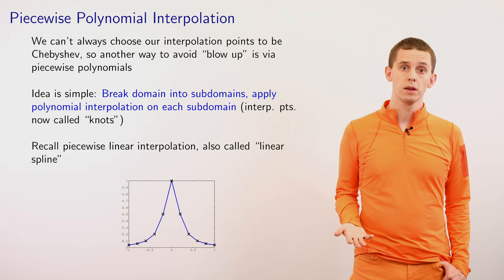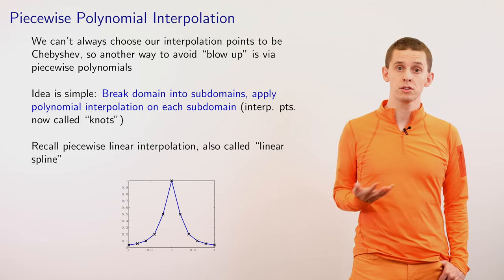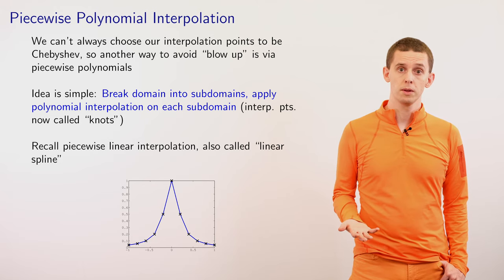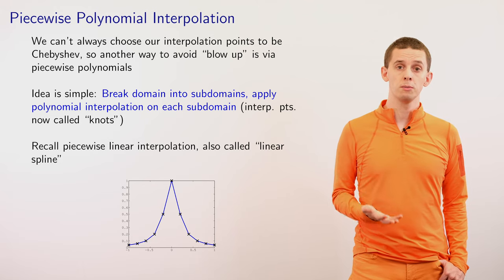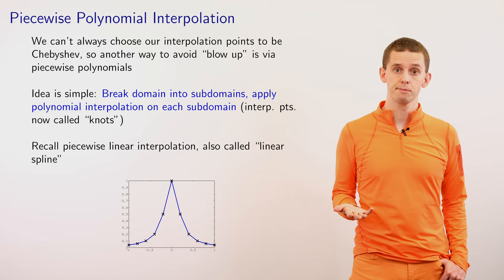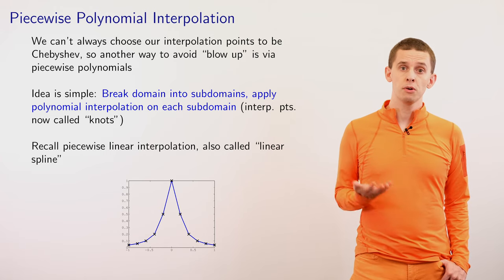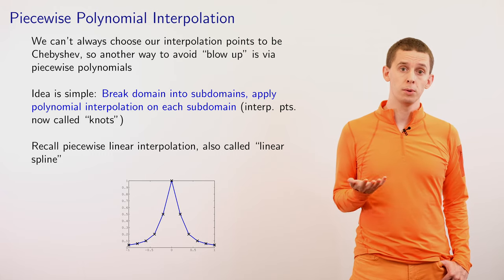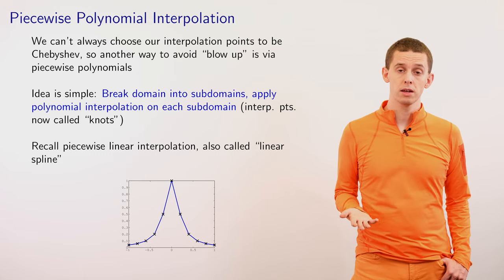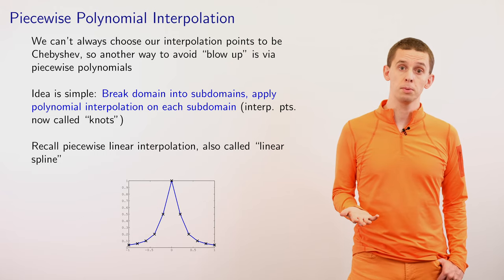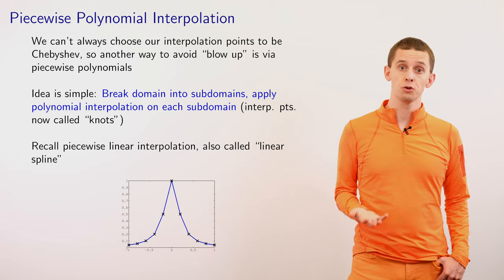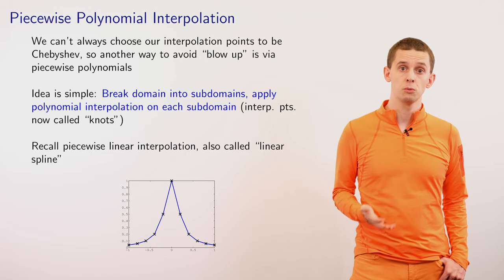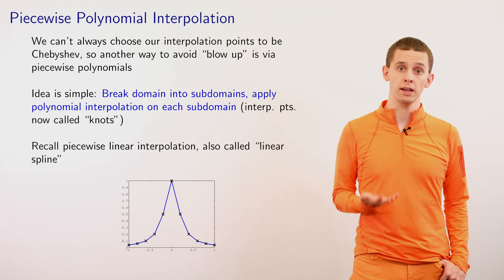The idea here is simple: we take our domain and divide it up into subdomains, and we do polynomial interpolation on each one. We use the term that the interpolation points are called knots. We've already seen one example of this — a number of discrete points connected by a piecewise linear interpolation, also referred to as a linear spline, where between every pair of data points we just introduce a linear function.